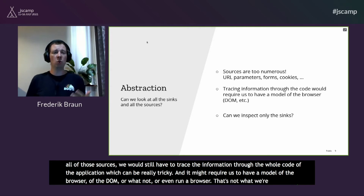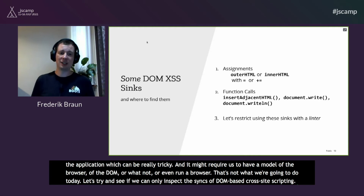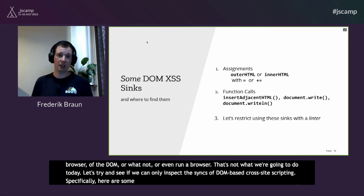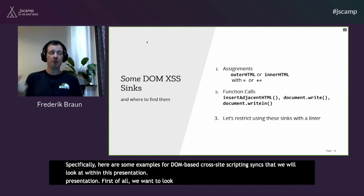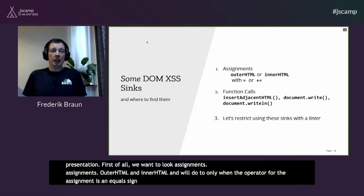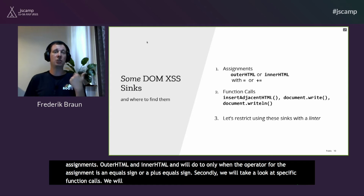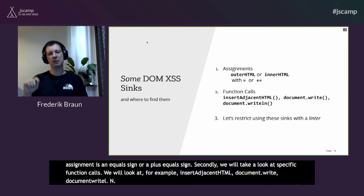Let's try to inspect only the sinks of DOM-based XSS. Here are some examples of sinks we'll look at. First, assignments to outerHTML and innerHTML — but only when the operator is an equals sign or plus-equals, since any other assignment couldn't cause XSS. Second, specific function calls such as insertAdjacentHTML, document.write, and document.writeln. Even though I hope people aren't using document.write anymore, we want to be exhaustive. Then let's see if we can restrict the usage of these with a linter.